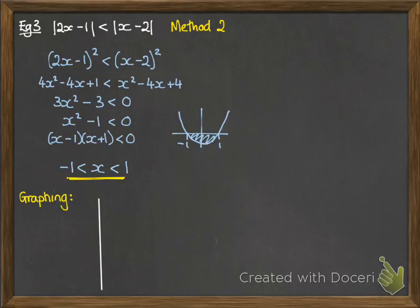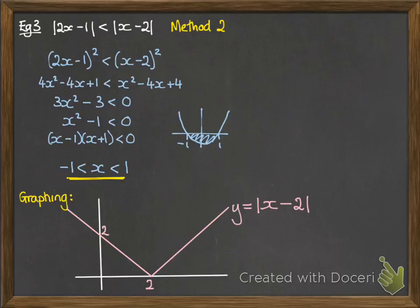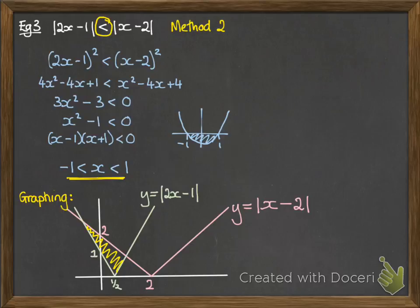You can also graph it. This might be required in a question to find a graph and then go on and find a solution, or you can just use it for checking your answers. So the graph of the modulus of x minus 2 looks like this, and the modulus of 2x minus 1 looks like this. So we're looking for where 2x minus 1 is less than x minus 2, and so we're looking for where the green line falls underneath the pink line. So that's this region here. So you'd find where those two lines cross, and that would be at 1 and minus 1. So anywhere between there is going to fit our inequality.